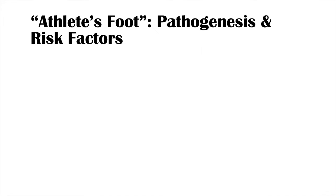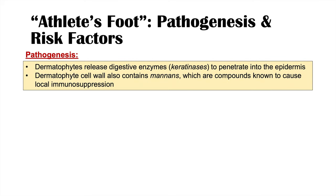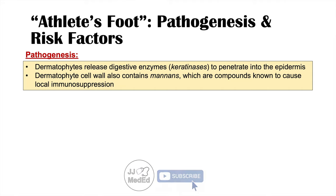The pathogenesis of this condition involves dermatophytes releasing digestive enzymes known as keratinases. These keratinases enable the dermatophyte to penetrate into the epidermis, which is made of keratin. The dermatophyte cell wall also contains mannins, compounds known to cause local immunosuppression. These two features — the ability to penetrate the epidermis via keratinases, and mannins enabling local immunosuppression — are important in all dermatophytic skin infections like jock itch and ringworm.